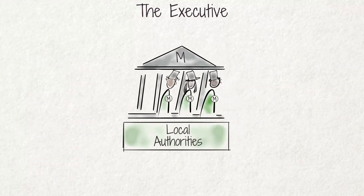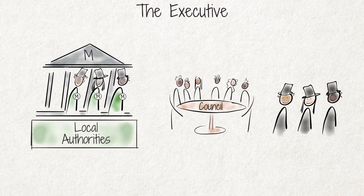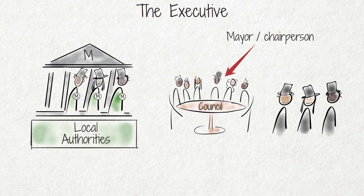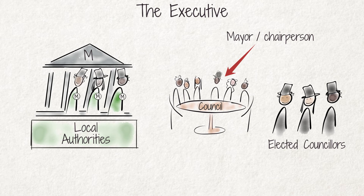At local level, there are different kinds of urban and rural local authorities or councils. They are headed by a mayor or chairperson and consist of a number of elected councillors. Each council has the right to govern the local affairs of the people within the area for which it has been established.